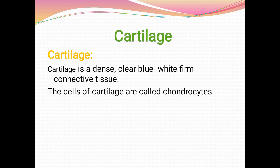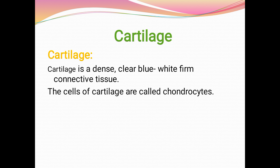Overall, the human skeleton is made of a bony framework, but in certain parts this framework is supplemented by cartilage. Cartilage is a dense, clear, blue-white, firm connective tissue. It is less strong than bone. The cells of cartilage are called chondrocytes.